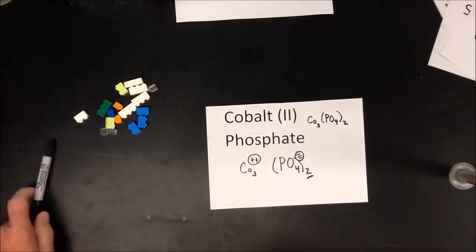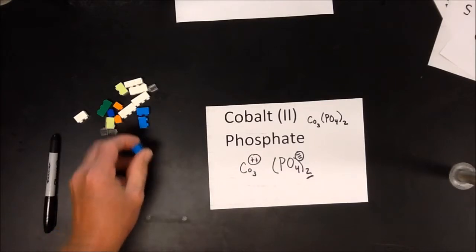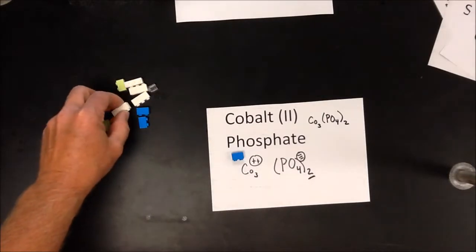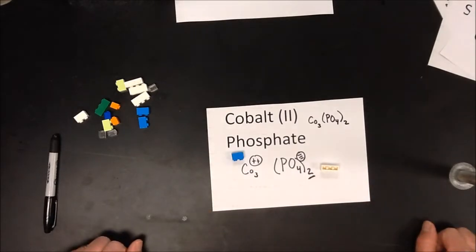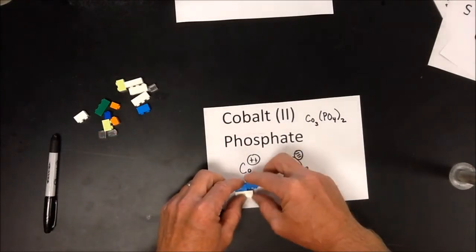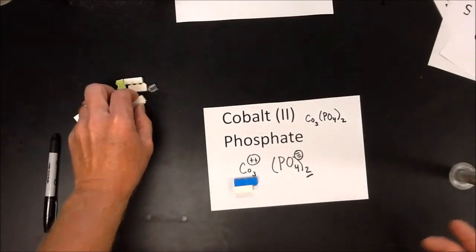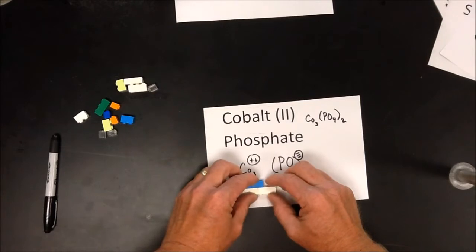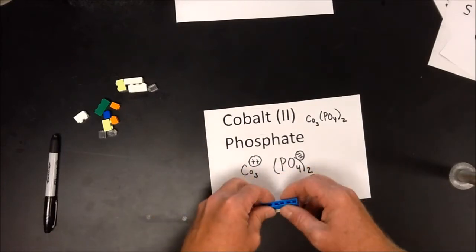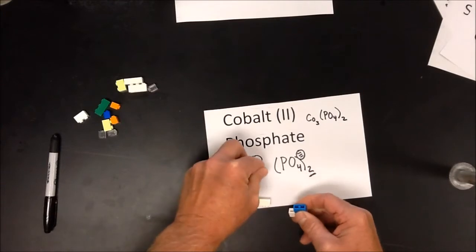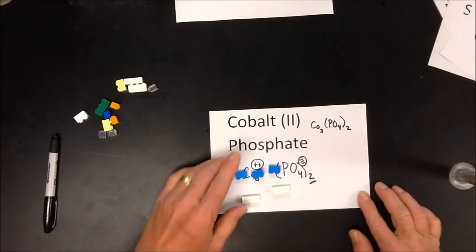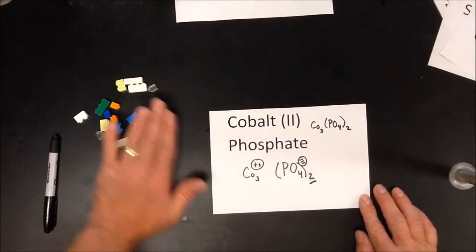Using Legos: the blue two-studded Lego is cobalt (plus 2) and the white three-ported Lego is phosphate (minus 3). Snapping them together shows it's not done — I add another cobalt, then another phosphate, then a final cobalt. The completed block has three cobalts for every two phosphates, confirming Co₃(PO₄)₂.